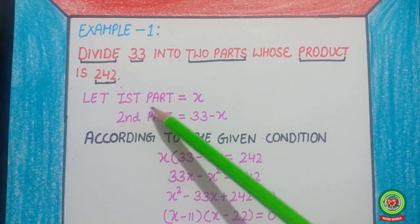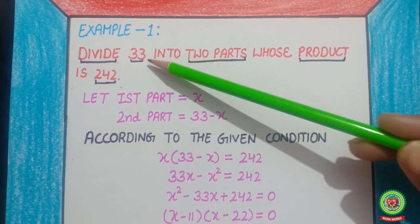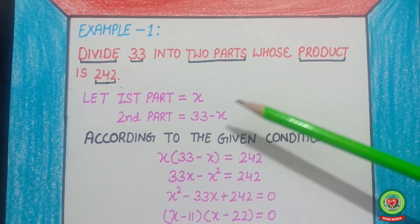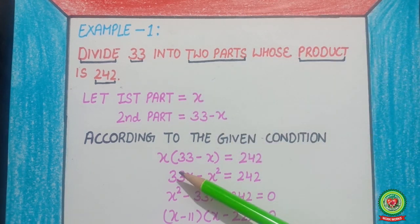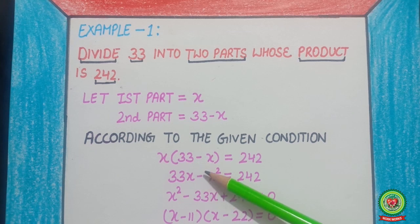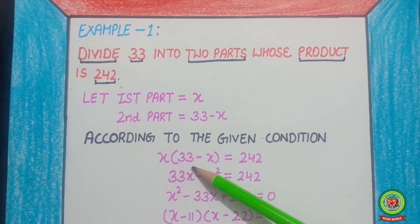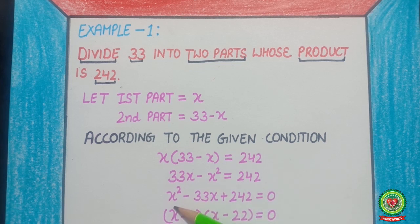Let the first part be x and the second part be 33 minus x. Now, according to the given condition, the product of these two parts is equal to 242. So, x times (33 minus x) equals 242. After applying the arrow method, 33x minus x squared equals 242. By collecting these terms, the equation becomes x squared minus 33x plus 242 equals 0.